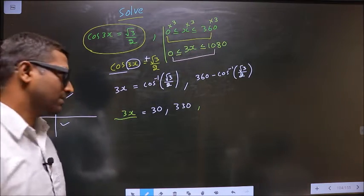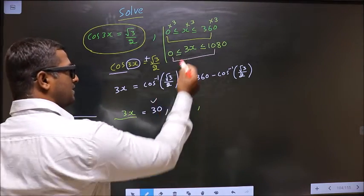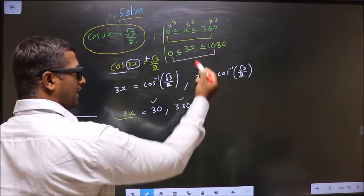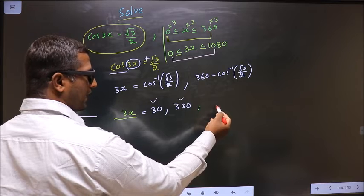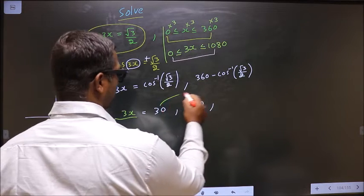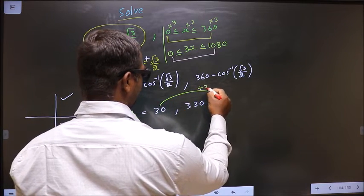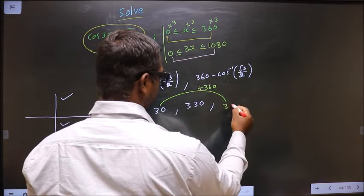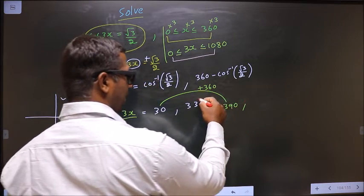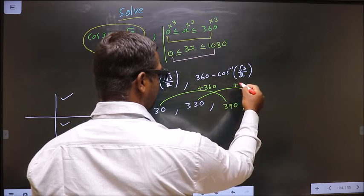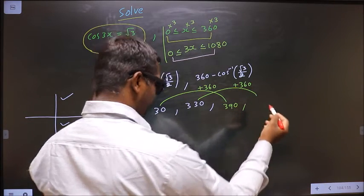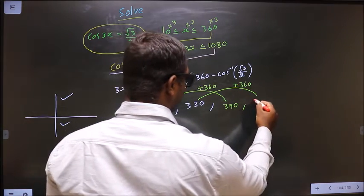Then automatically x values will lie in this interval. Understood. This lie in this interval yes. This also lie in the interval. To get another angle add 360 to this we get 690. To get another angle add 360 to this we get 750.